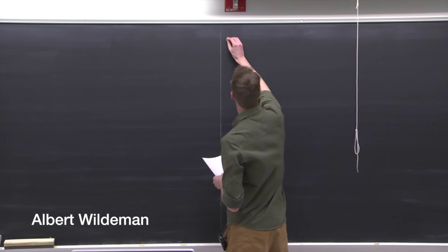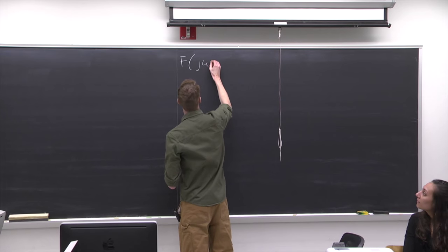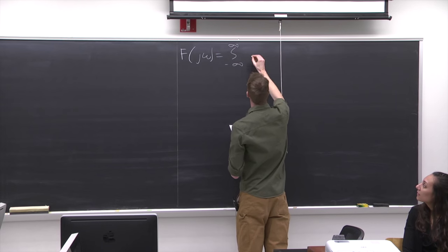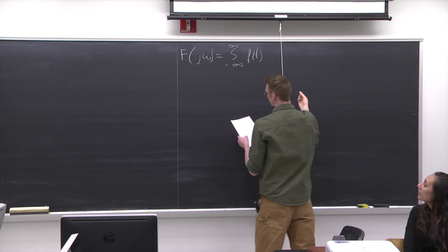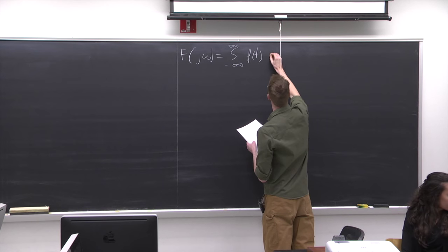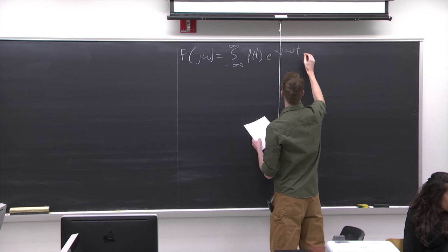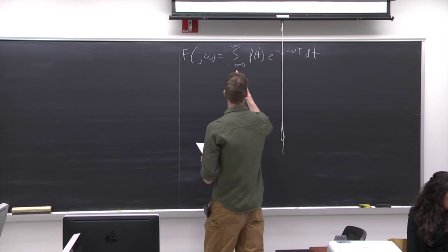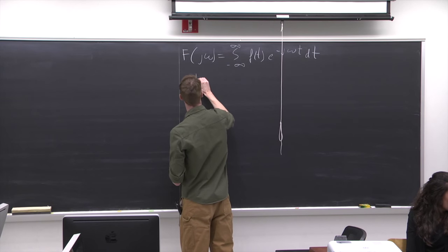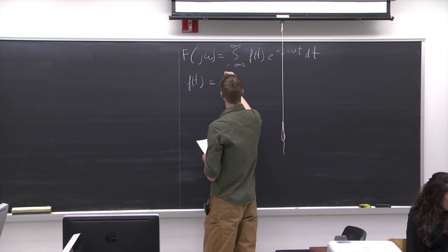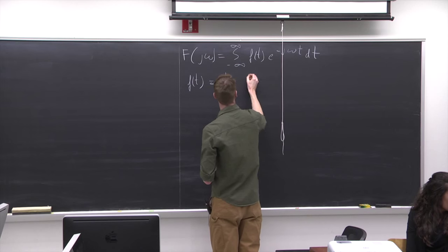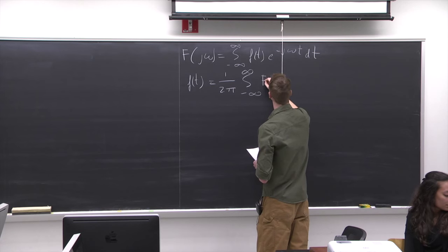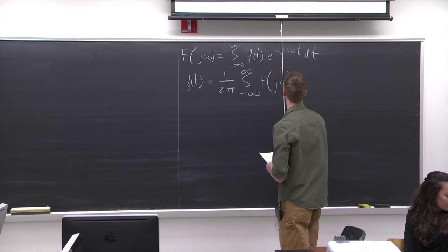Let's start by recalling the continuous Fourier transform. This is the integral of our time domain function f(t), and related to this is the inverse transform — f(t) equals 1 over 2π, integrating over capital F, the transform.